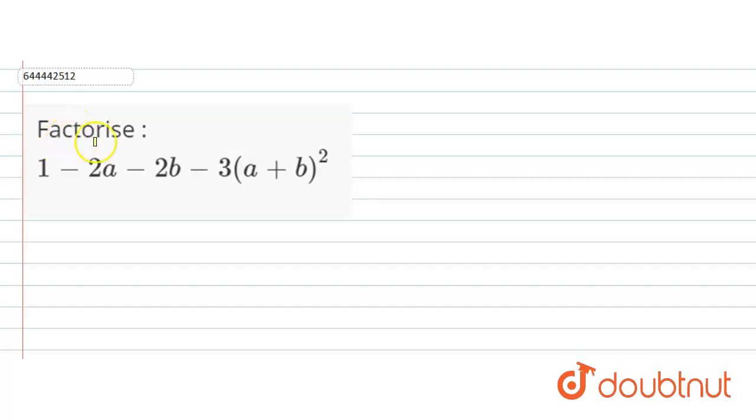Hello everyone, here the question is factorize 1 minus 2a minus 2b minus 3 into a plus b whole square.